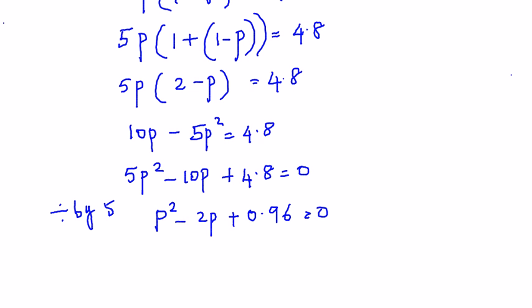Again I am going to solve it by the sum and product method. My sum is -2 here and product is 0.96 times coefficient of p² which is 1, so it is 0.96. So 1.2 × 0.8 is going to give me 0.96.